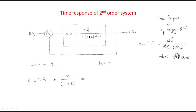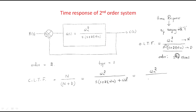We find the closed loop transfer function using the formula: closed loop TF = numerator / (numerator + denominator). The numerator is ωn², and the denominator becomes s² + 2ζωn·s + ωn². So the closed loop transfer function is ωn² / (s² + 2ζωn·s + ωn²).